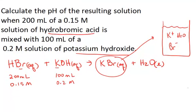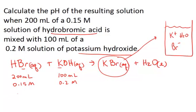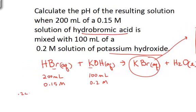We have to think about how much of each acid and base there is to see if any is left over that could dominate the resulting pH. To figure that out, we need to calculate the number of moles of each substance — volume times molarity equals moles. So 0.2 liters times 0.15 molar equals 0.03 moles of HBr. And 0.1 liter times 0.2 molar equals 0.02 moles of KOH.